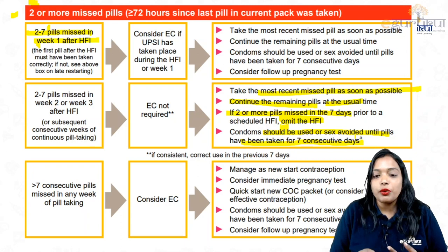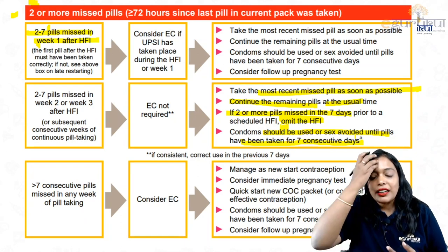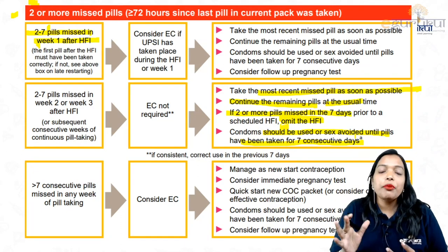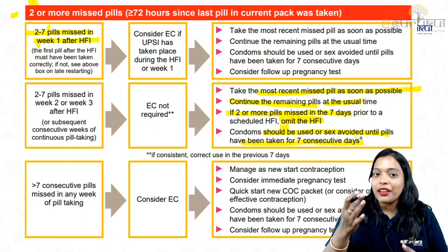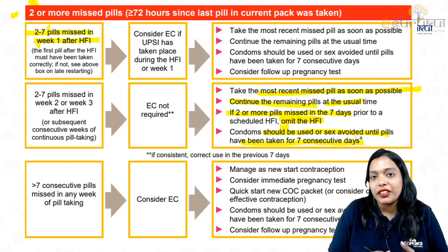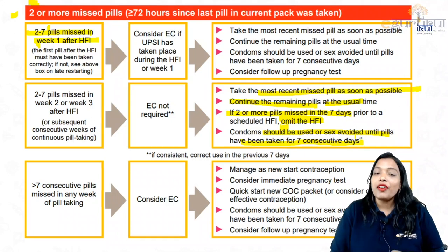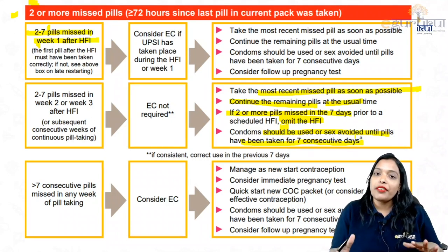If there has been consistent and correct use in the previous seven days, emergency contraception is not required in week two or week three even if she has missed two to seven pills.